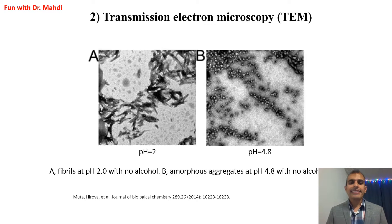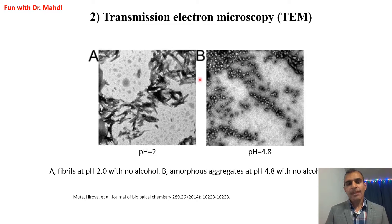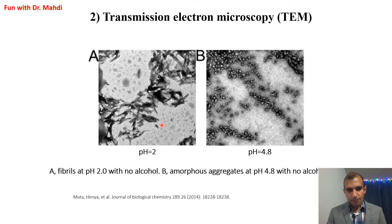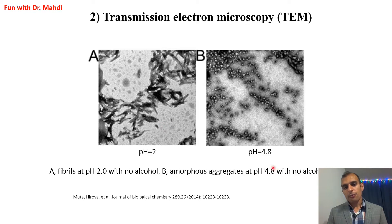The second technique is Transmission Electron Microscopy, or TEM. With TEM you can directly visualize amyloid fibrils. For example, in this study they decreased the pH to 4.8 and 2, and the TEM images clearly show the fibrils.